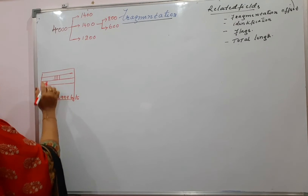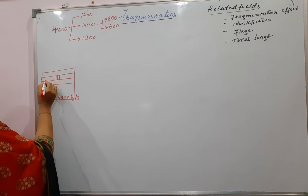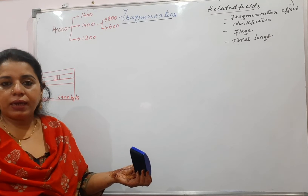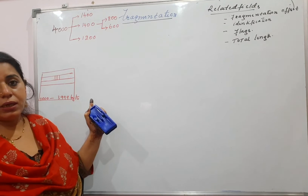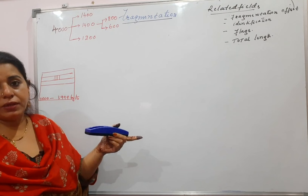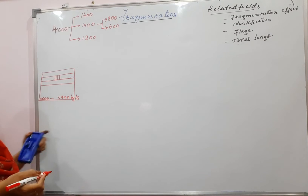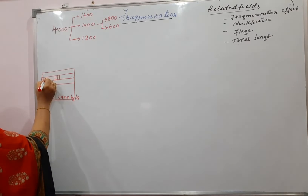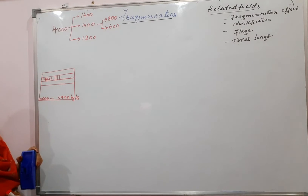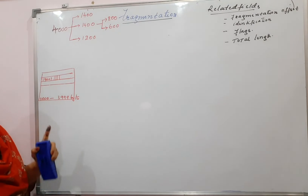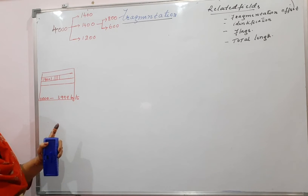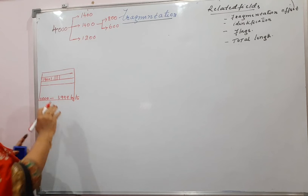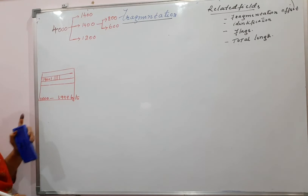Only the fields related to fragmentation — we can put the values. Identification is a 16-bit field, so you can select any number randomly. 16 bits means 2 to the power of 16, so you can select any number in that range. Let me take 19001. If the original datagram carries the identification as 19001, then all the fragments of this original datagram should and must carry the identification as 19001.